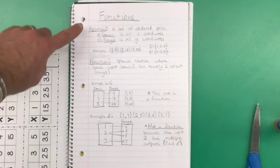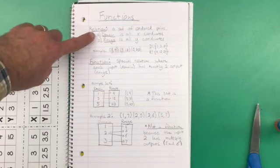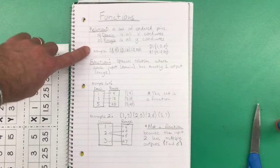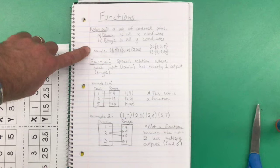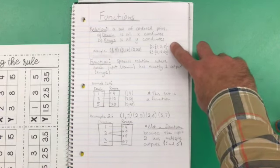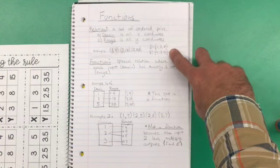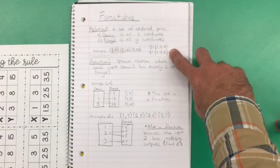So a relation is a set of ordered pairs. The domain is all x-coordinates. The range is all y-coordinates. And here's some examples. So you've got our ordered pairs: (1, 4), (3, 12), (5, 20). And our domain is 1, 3, and 5, all the x's, and the y's are the range: 4, 12, and 20.